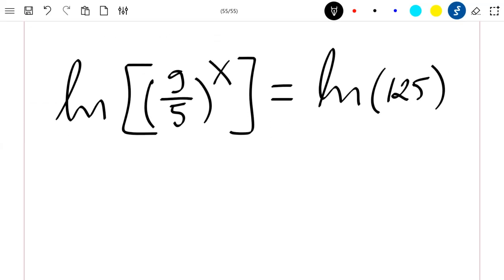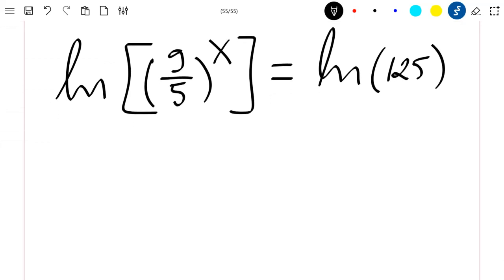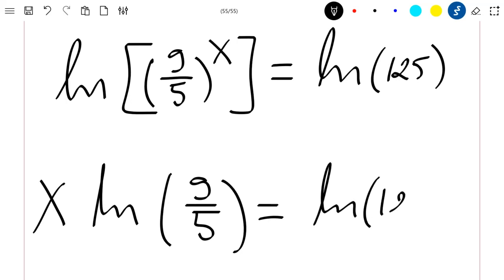So what is this using the property of the ln function? You can see that this is x ln of 9 divided by 5 equal to ln of 125.